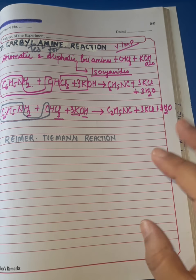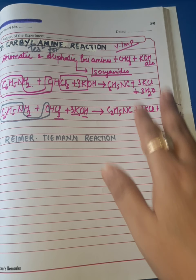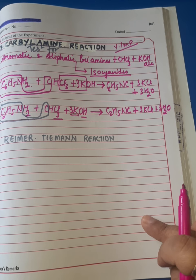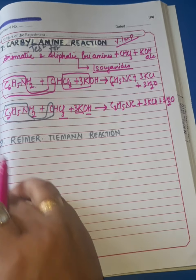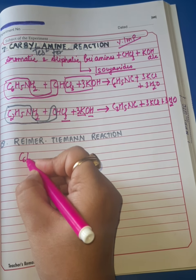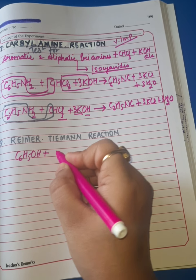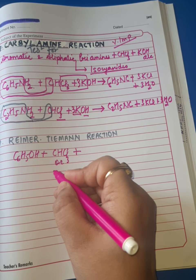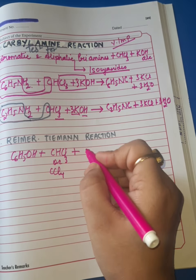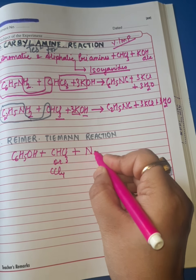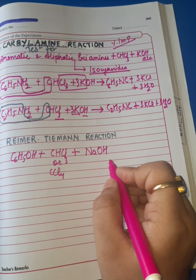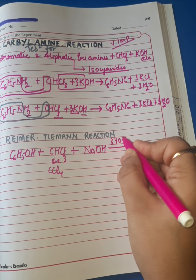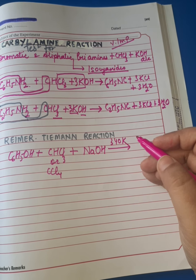Now we have the next reaction, Reimer-Tiemann reaction. This is a very specific reaction of phenol. In this reaction, phenol C6H5OH is treated with chloroform or carbon tetrachloride CCl4 in the presence of caustic alkali, NaOH or KOH. When this mixture is heated at around 340 Kelvin, it results in the formation of salicylaldehyde or salicylic acid.